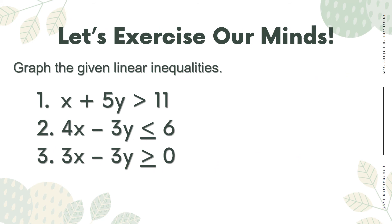Let's exercise our minds. Graph the given linear inequalities. Number 1: x plus 5y is greater than 11. Number 2: 4x minus 3y is less than or equal to 6. Number 3: 3x minus 3y is greater than or equal to 0.